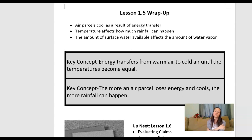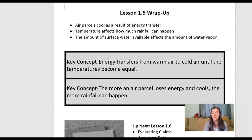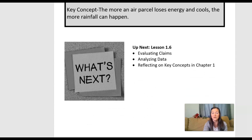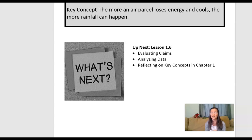You might have also found some information about water vapor — if you have a lot of water vapor or just a little, maybe you get more or less rain. We're going to learn more about water vapor in the next lesson. Next time we're together, we are going to evaluate some claims about what is causing severe rainstorms, look at some data, and practice our CER skills — claim, evidence, reasoning — and do some writing. I look forward to seeing you for our next lesson. If you didn't have time to write everything down, you can pause the video, rewatch it, or take a few minutes to summarize your thoughts. Thanks for joining me — I'll see you next time.